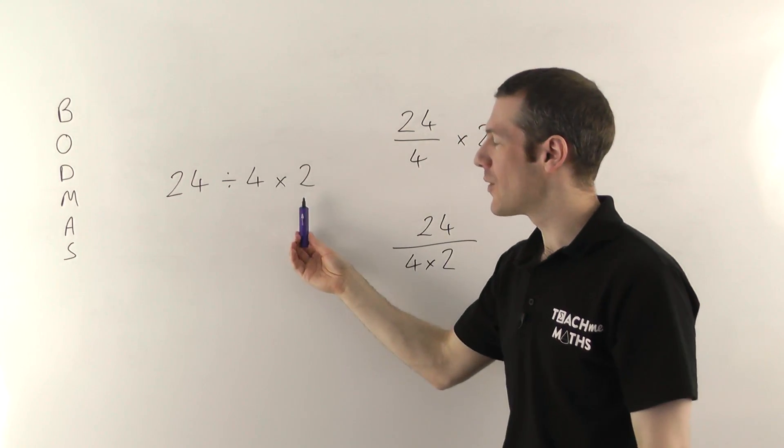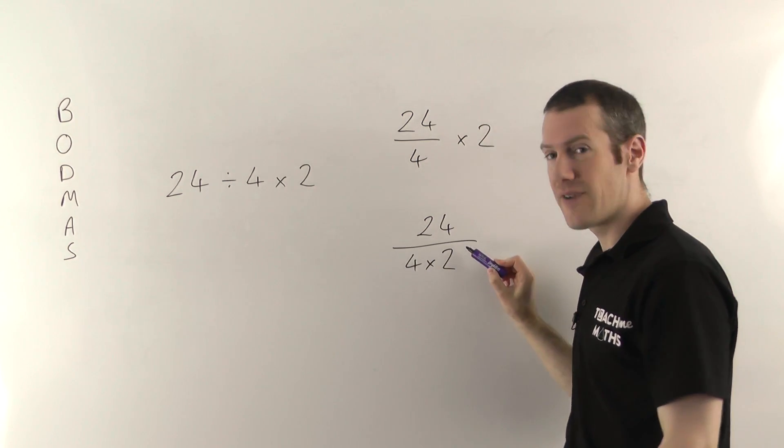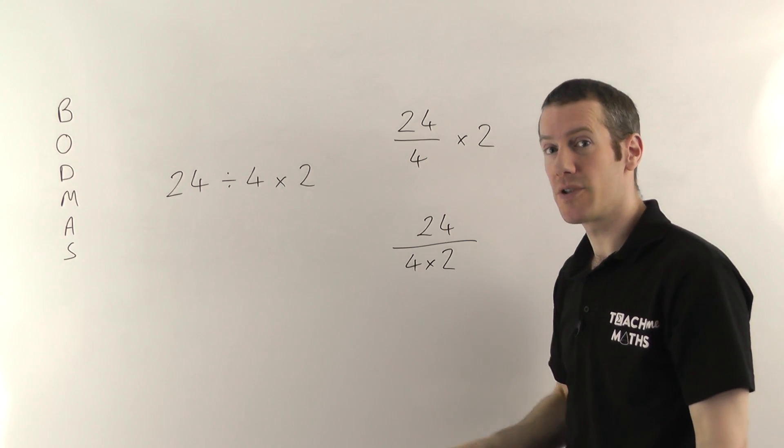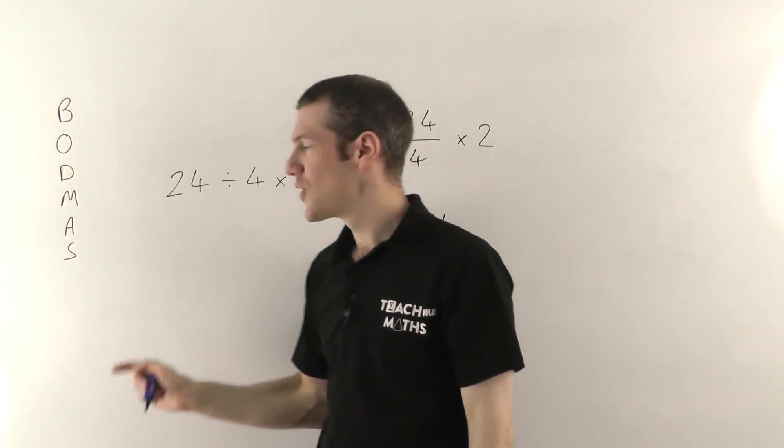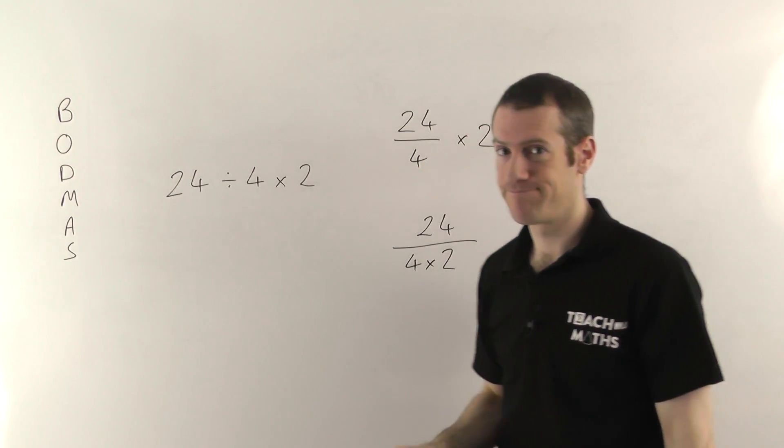And that's why we don't use this and we always use fractions for division. Because in theory although you could work it out, it just slows you down. Whereas that's very clear immediately. There's no ambiguity about what it could possibly mean. So that's the first thing you've got to bear in mind with BODMAS. We never use division or the divide sign. We always do it with fractions.